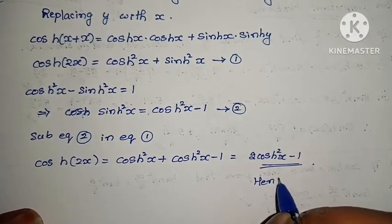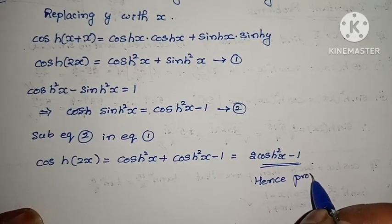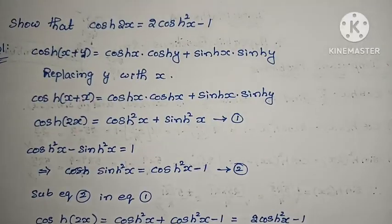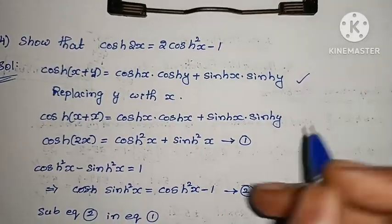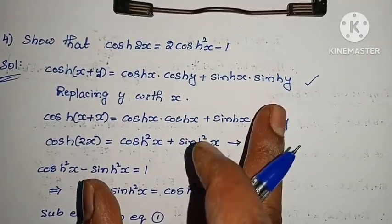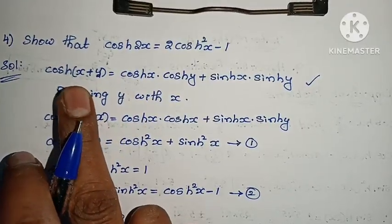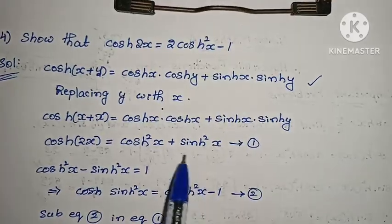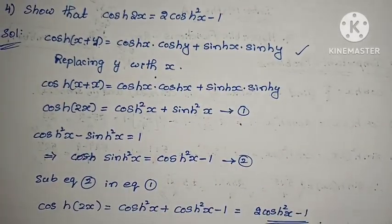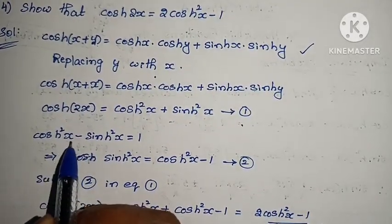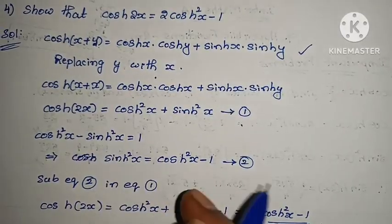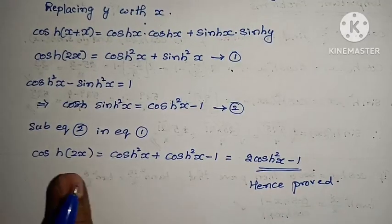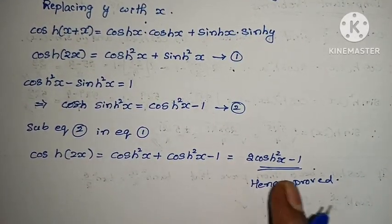Hence, cosh(2x) = 2cosh²(x) − 1 is proved. We used the cos(a+b) addition formula adapted to the hyperbolic form, replaced y with x, then used the hyperbolic identity cosh²x − sinh²x = 1 to substitute and get the result.